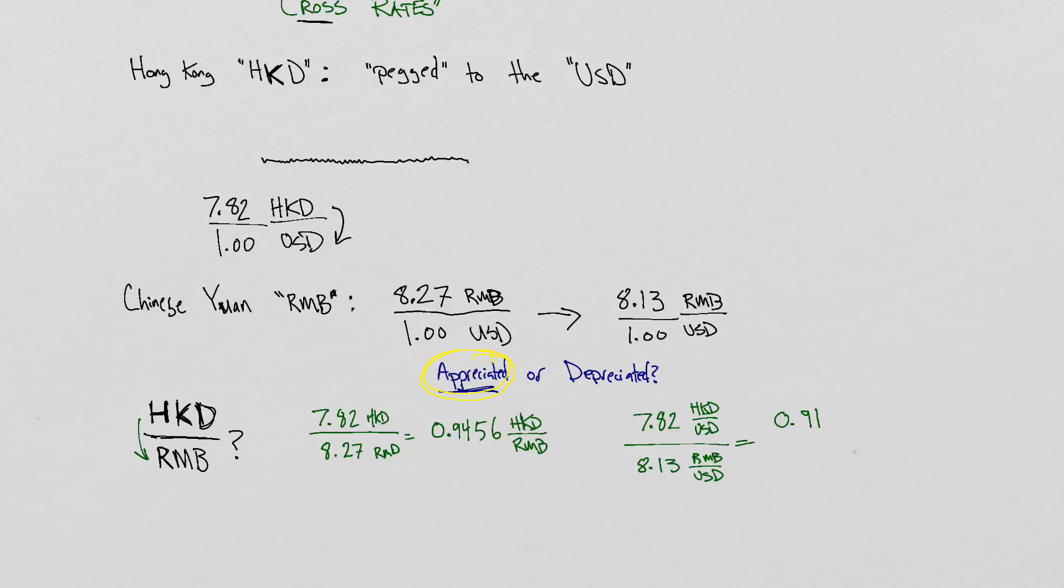Resulting in a new exchange rate of 0.9619 Hong Kong dollar versus Chinese yuan.